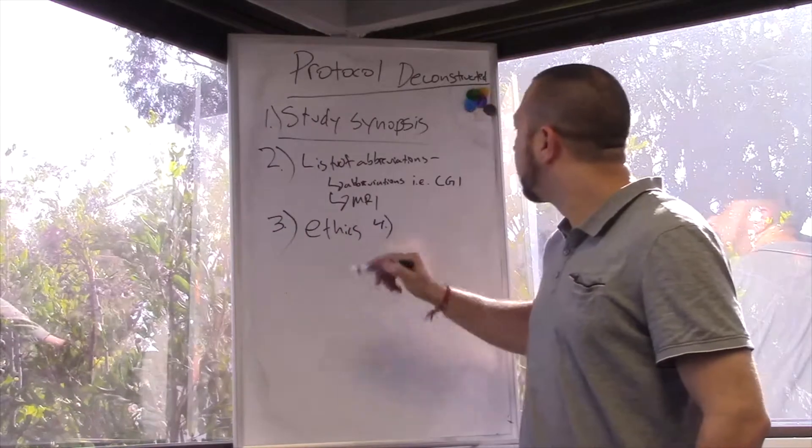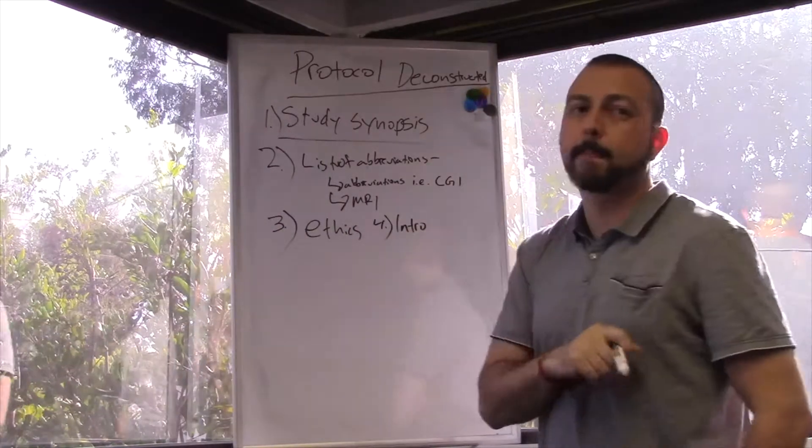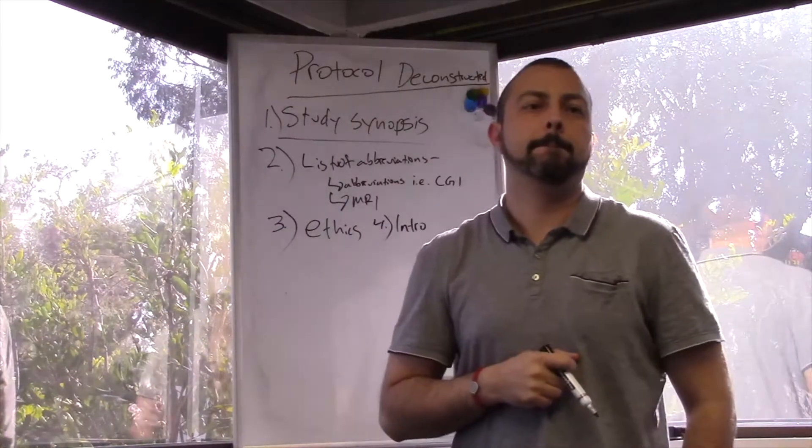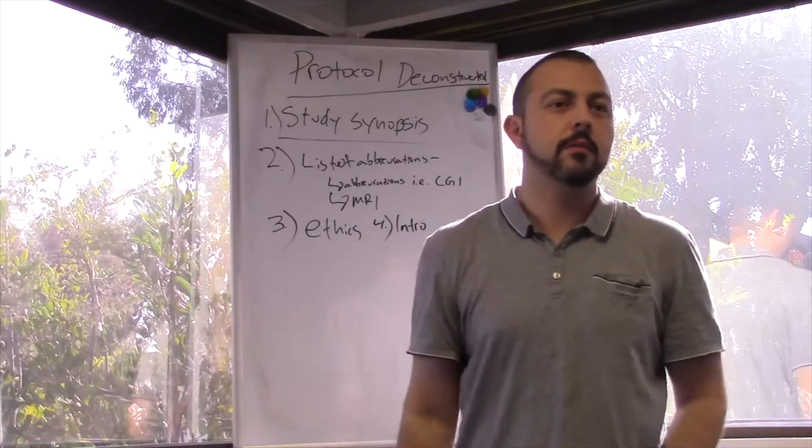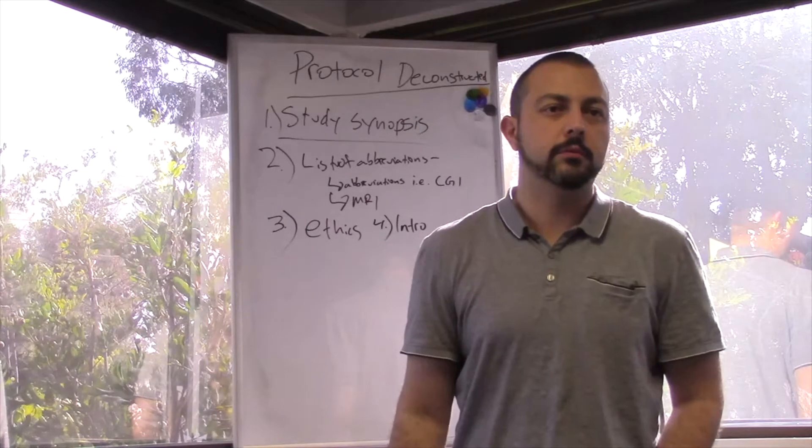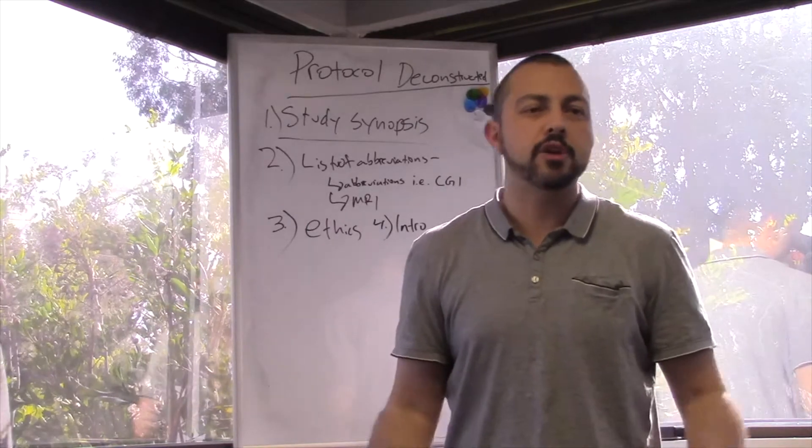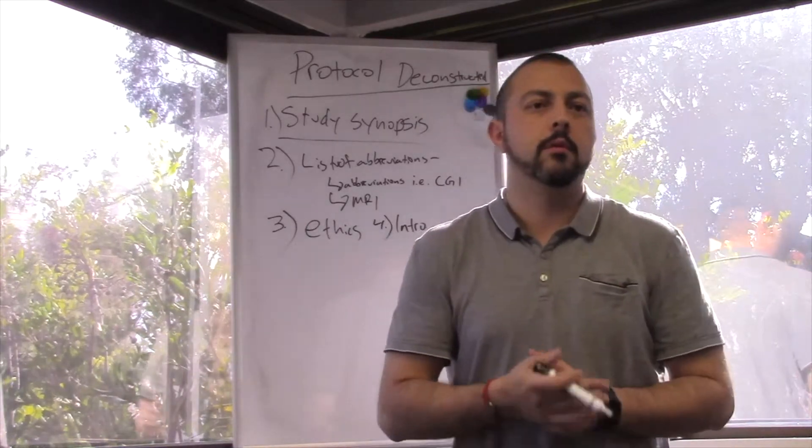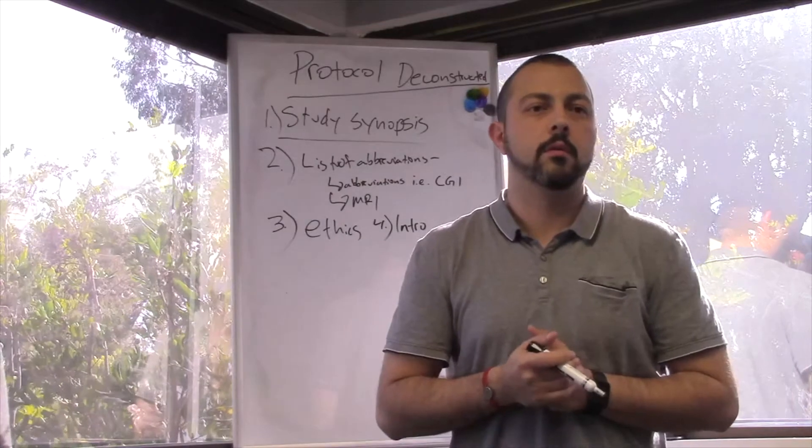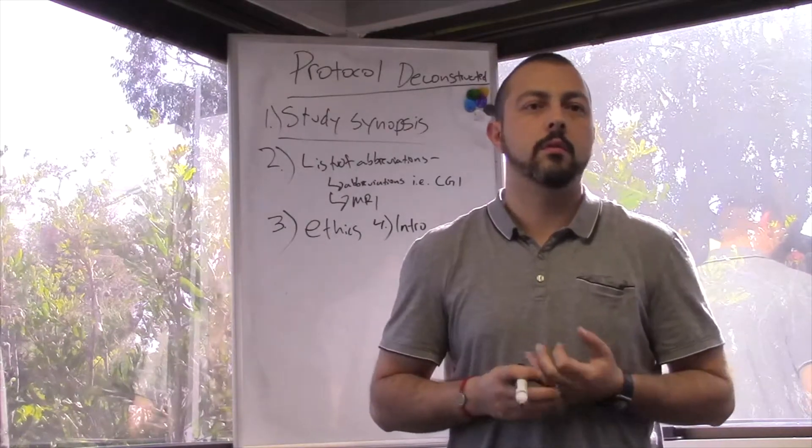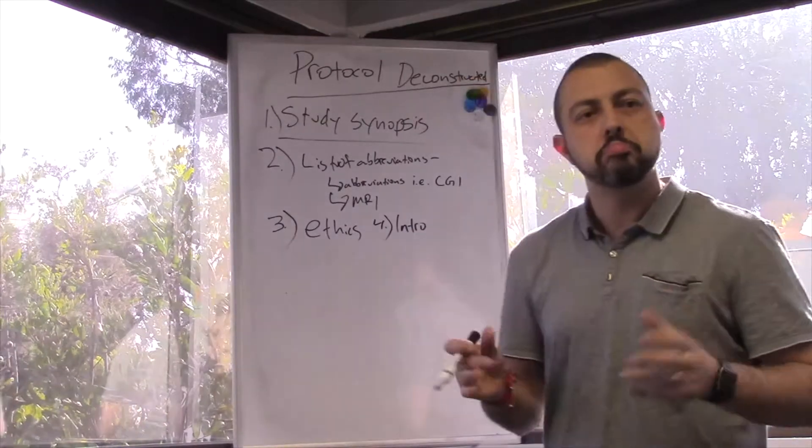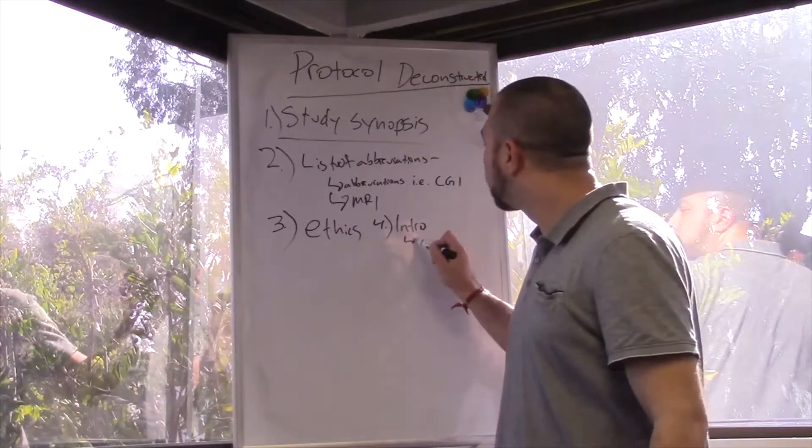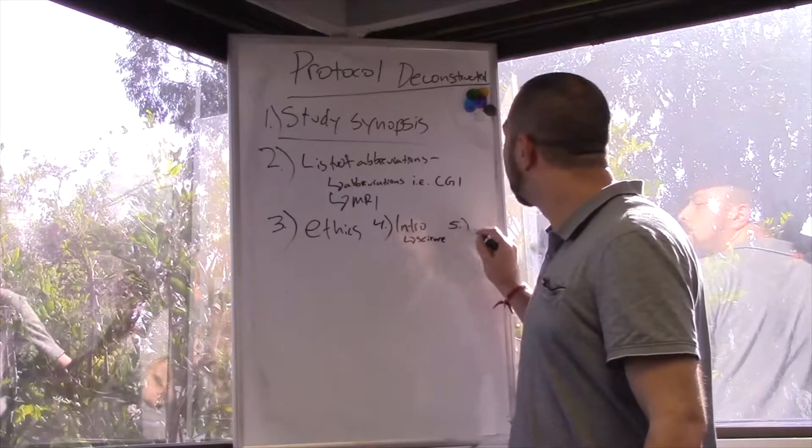Number four is introduction. It's just giving you a rundown on what exactly it is they're studying, like a rationale. It's kind of the same thing you would find in an investigator brochure. It's the chemical compound, what they're studying, what's the science behind it, the science behind the drug. Next, study objectives.